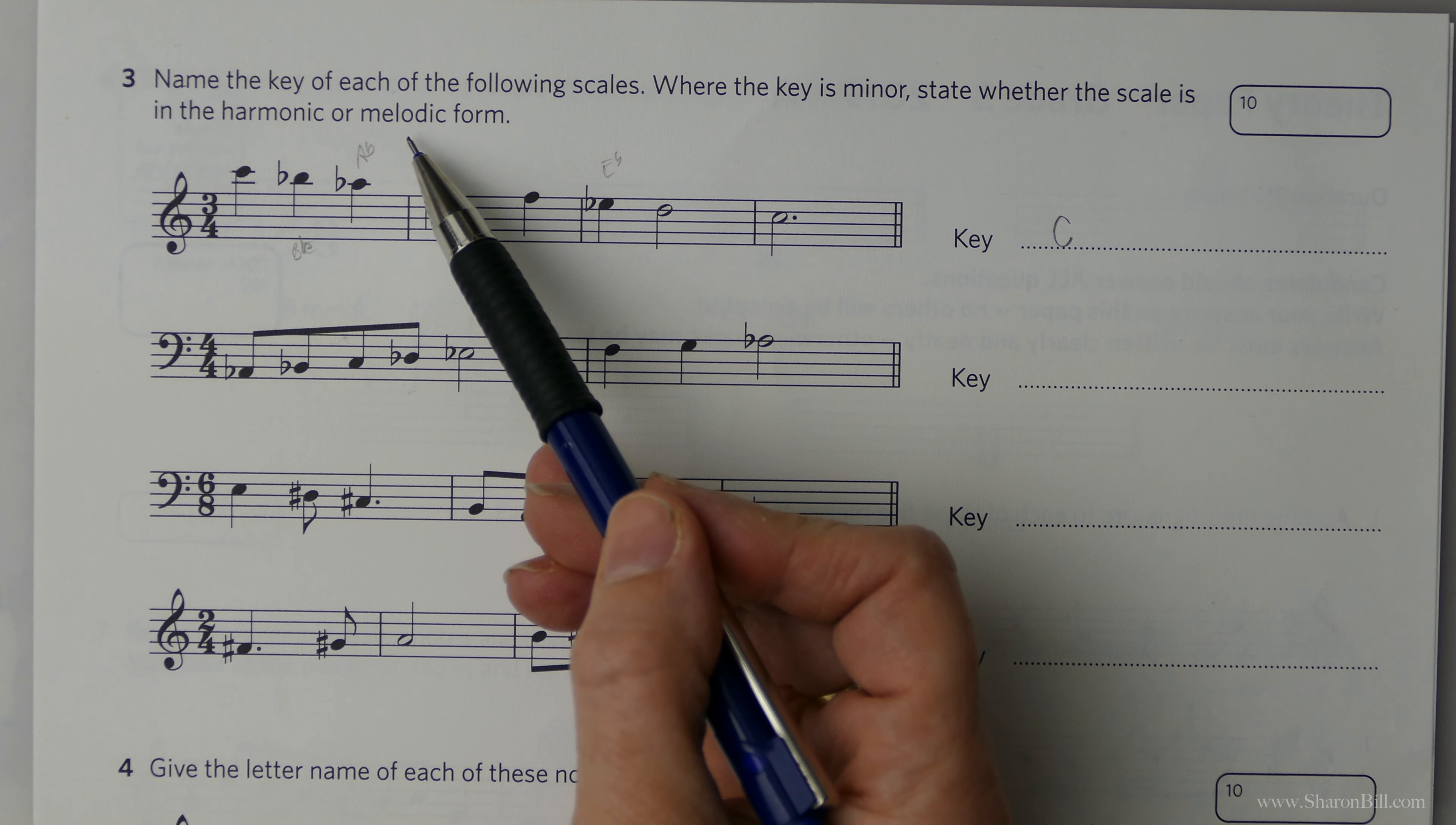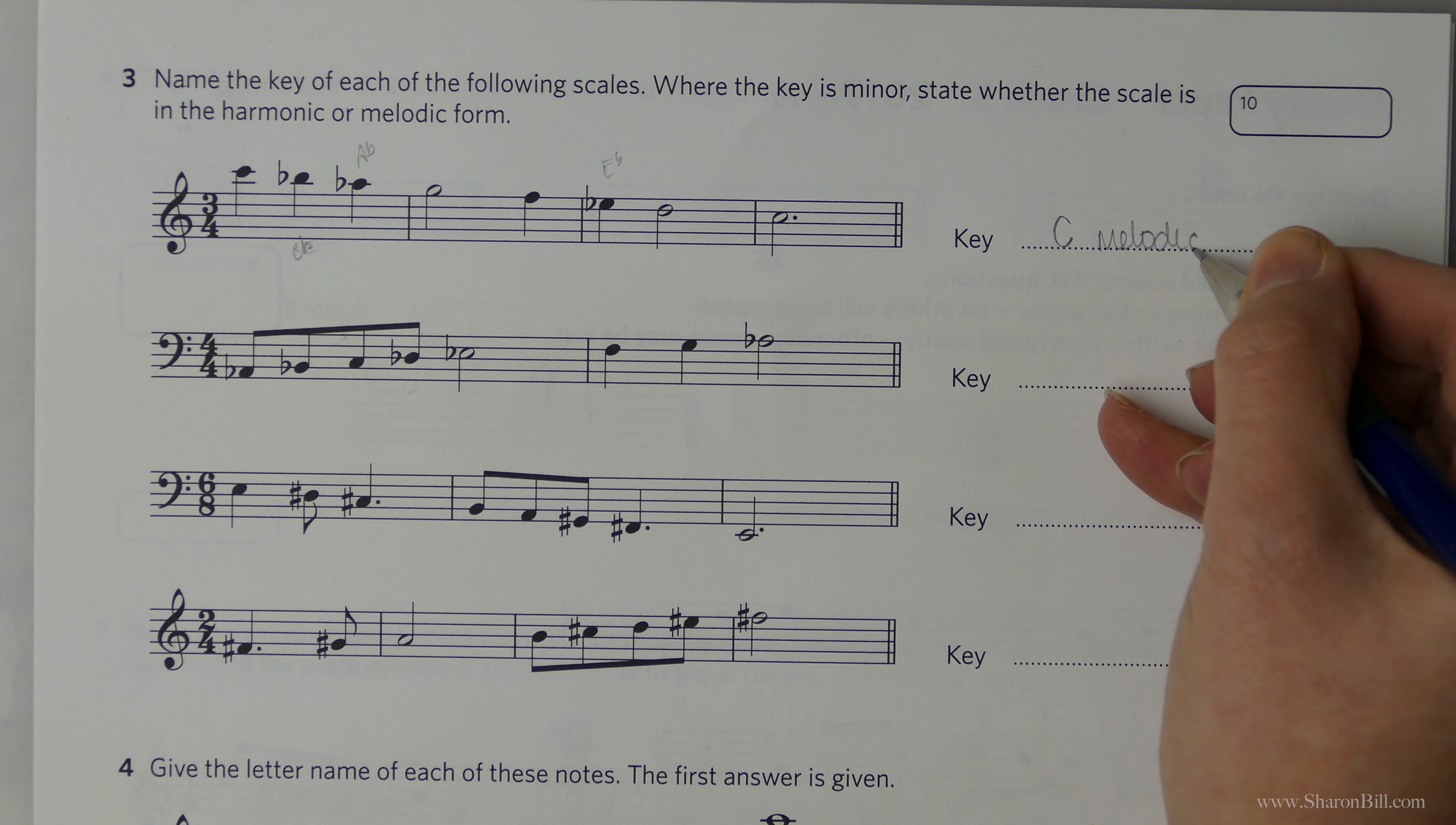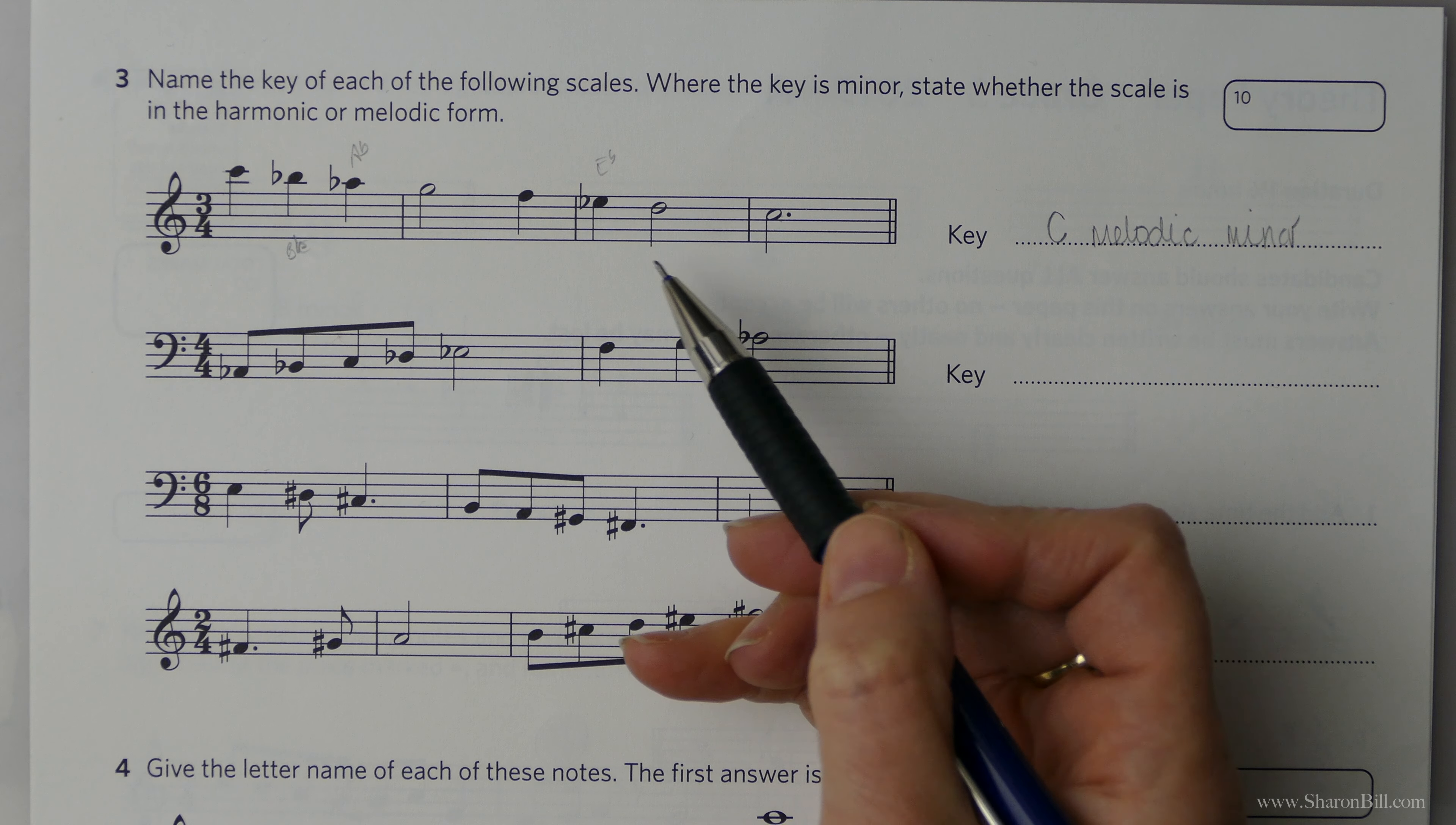That means it must be the melodic minor form. If it was the harmonic minor form, the seventh would be raised and that would become a natural, but nothing's been altered. It's just the key signature of the related key, and so we're coming down in the melodic minor descending form. So it's C melodic minor. And so if you take things just one step at a time, it's quite easy to get to the correct answer. But it's when you just try and look at it as a whole and make a snap decision that's when you'll go wrong. Take it in stages.